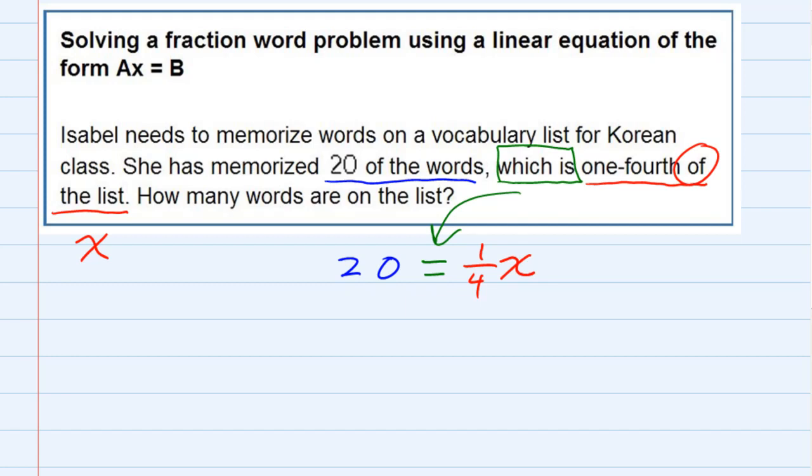So to find out how many words, that's my question here - how many words are in the list - I'm going to need to solve for x. We need to get rid of that one fourth, and we can get rid of the one fourth by multiplying by the reciprocal, which is four.